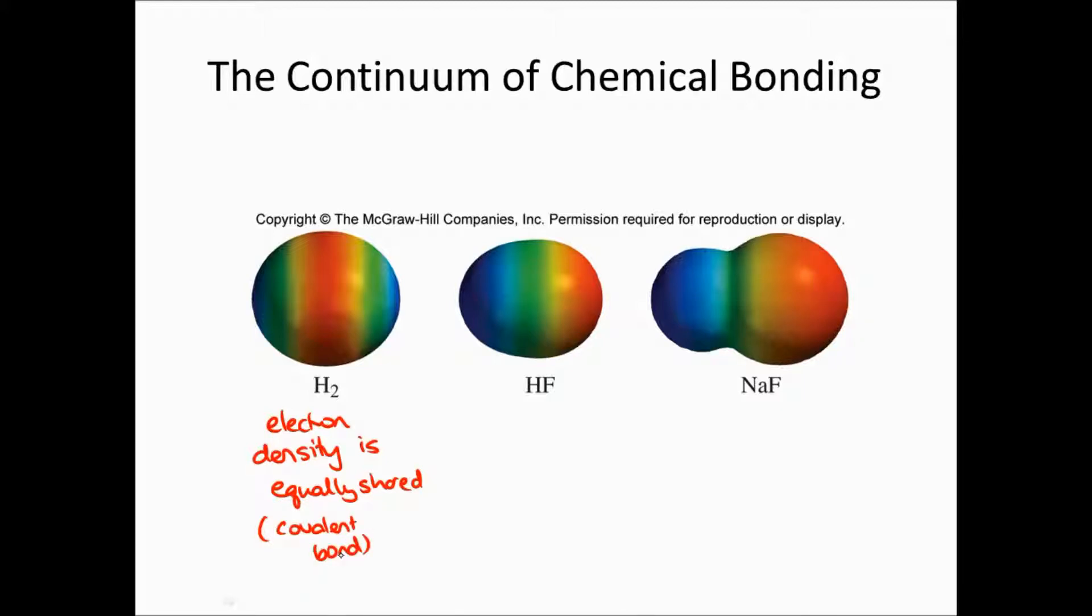A pure covalent bond would be like this. And we've talked about ionic bonding where electron is transferred completely from one atom to another. In the case of a binary ionic compound, that's our ionic bond.